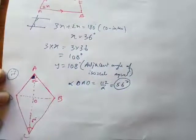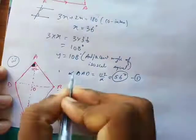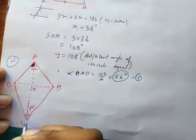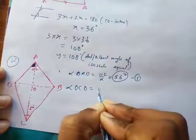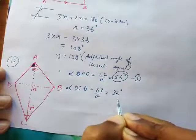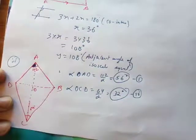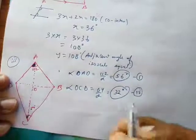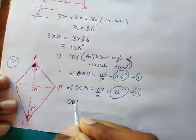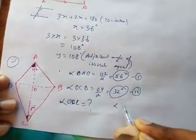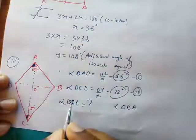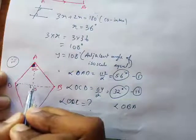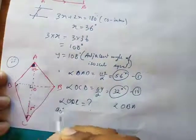Angle OAD = 56°. The longer diagonal also bisects angle C, so angle OCD = 64 ÷ 2 = 32°. Now we need to find angle ODC and angle OBA. For angle ODC — in a kite the diagonals bisect each other at 90°, so that angle is 90°. We have 90° + 32° + angle ODC = 180° by the angle sum of a triangle.